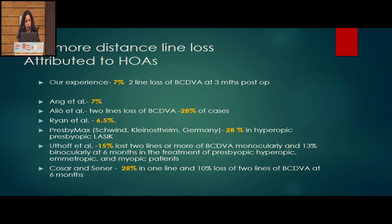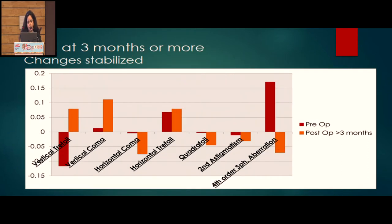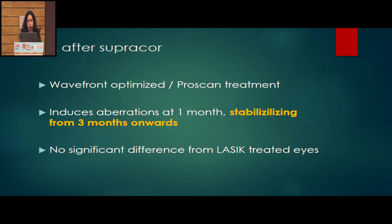There have been concerns about whether this treatment induces higher-order aberrations. Literature reports one or two line loss in 6.5% to 28% of patients undergoing presbyLASIK including PresbyMAX. In our experience this two-line loss occurred in 7% of cases. We looked retrospectively at aberrations: at one month there was an increase in vertical coma, vertical trefoil, and a significant change in spherical aberrations from positive to negative. But at three months this was stabilizing — the only remaining significant change was in spherical aberrations.